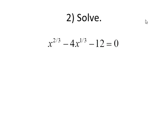Let's try another one. Same idea. x to the two-thirds, x to the one-third and a constant term. We're going to let u equal x to the one-third power and u squared can replace x to the two-thirds power. u squared minus 4u minus 12 equals zero.